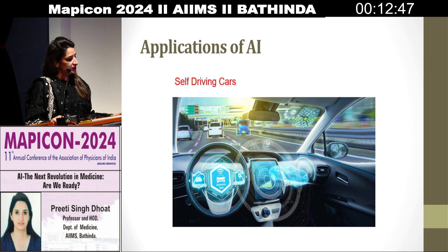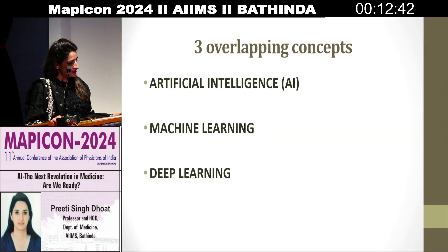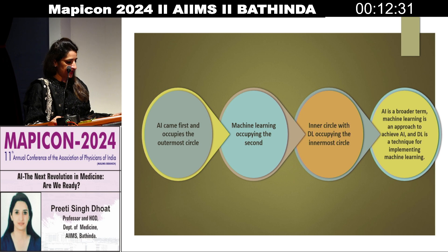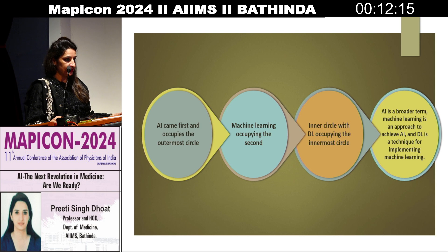These are the three components of artificial intelligence: artificial intelligence, machine learning, and deep learning. Artificial intelligence came first and occupies the outermost circle. Machine learning occupies the second inner circle, with deep learning occupying the innermost circle. Artificial intelligence is a broader term; machine learning is an approach to achieve AI, and deep learning is a technique for implementing machine learning.